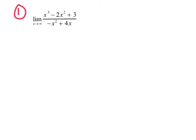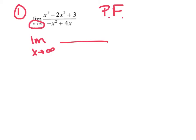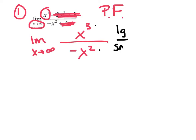Number one: the limit as x approaches infinity of x cubed minus 2x squared plus 3, over negative x squared plus 4x. The only reason I'm using power fight is because it's the limit as x approaches infinity. I rewrite it with one term on top and bottom. Biggest power on top is x cubed; biggest on the bottom is negative x squared. The larger one is on top — large over small — so this does not exist.